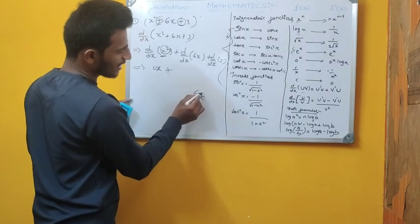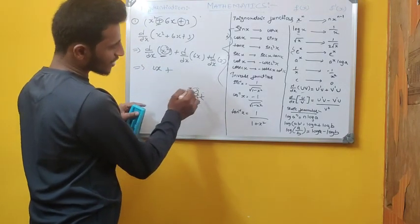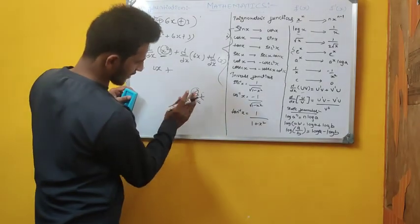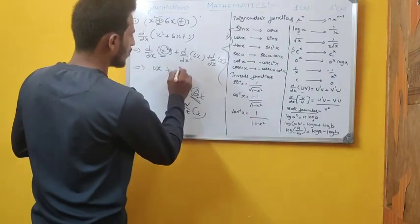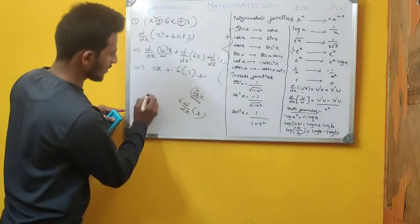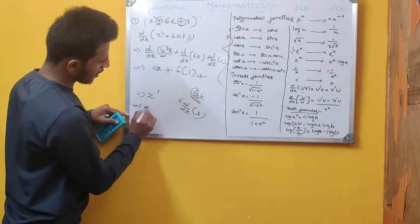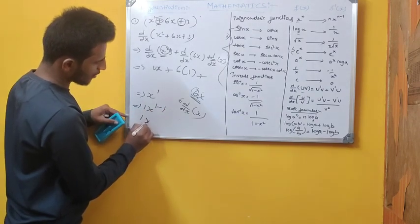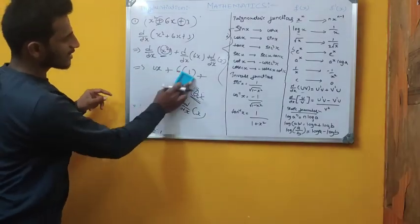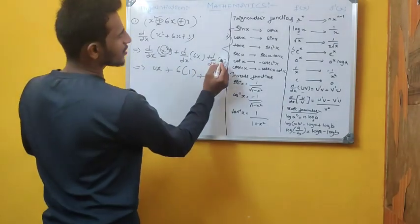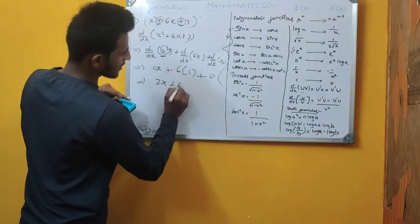Then 6x: the coefficient is 6 and the variable is x. So it becomes 6 × d/dx(x) = 6 × 1 = 6. For the constant 3, differentiation of a constant is 0. So the final answer is 2x + 6.